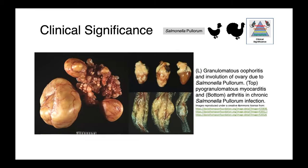In the image on the left, you can see granulomatous oophoritis — an involution of the ovary due to salmonella pallorum, with these very waxy looking egg yolks on the ovary. On the top, we have pyogranulomatous myocarditis, with petechiae on the cardiac fat quite visible. On the bottom, we have septic arthritis — very enlarged, abnormal joints associated with chronic salmonella pallorum infections.